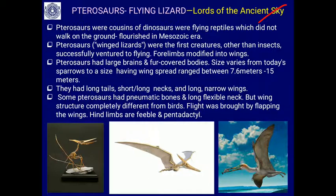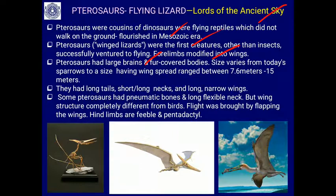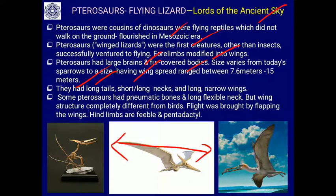Coming to pterosaurs — the flying lizards — they are called lords of the ancient sky. Pterosaurs were cousins of the dinosaurs, belonging to the Archosauria branch. These flying reptiles mainly did not walk on the ground and flourished in the Mesozoic era. They were the first creatures other than insects to successfully fly. Their size varied from today's sparrow up to a wingspan of 15 meters.